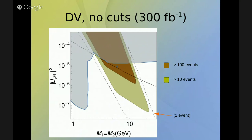If we do not impose any cuts at all, the only difference with respect to the previous plot is that we add the branching ratio from the neutrino into one muon and two jets. The brown region has more than 100 events and the green region has more than 10 events. This is the starting point.